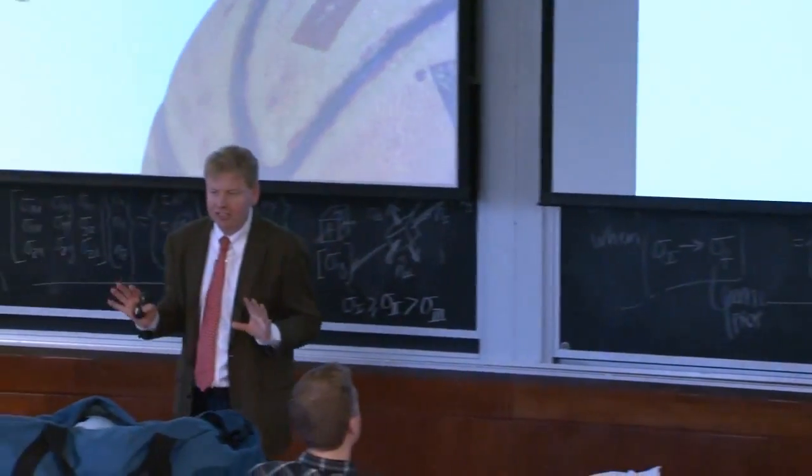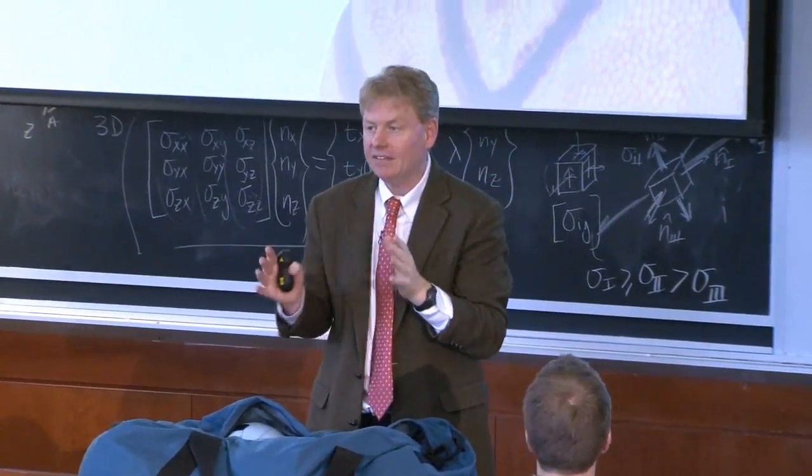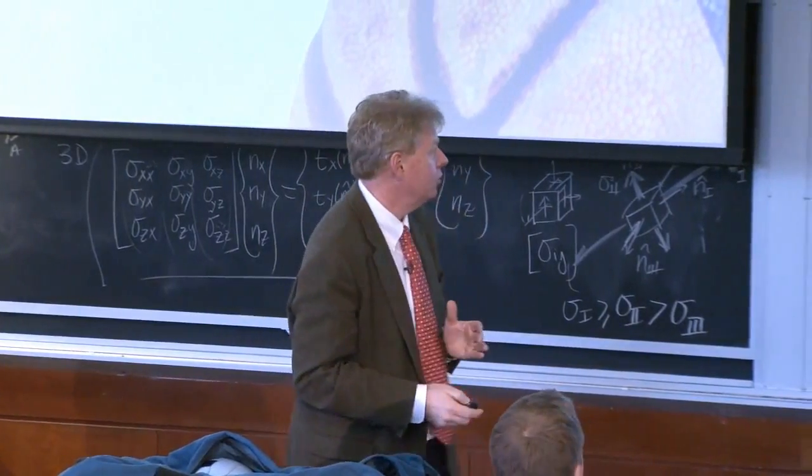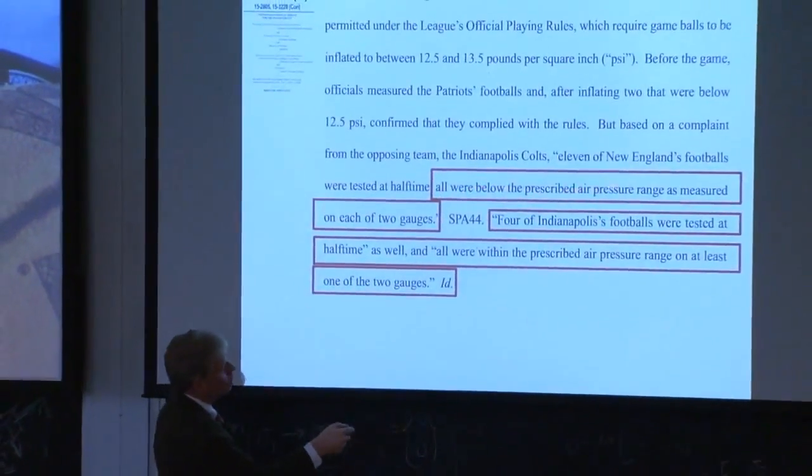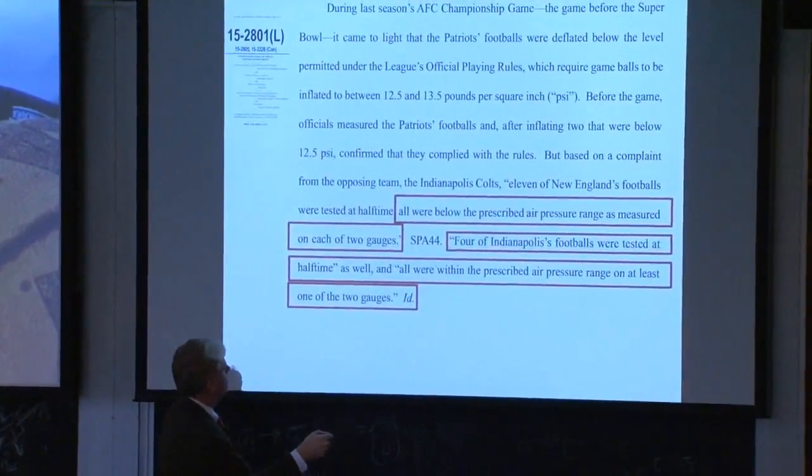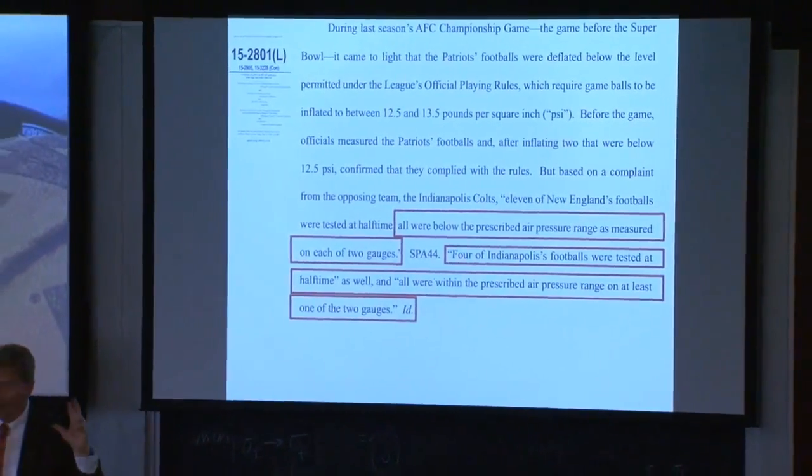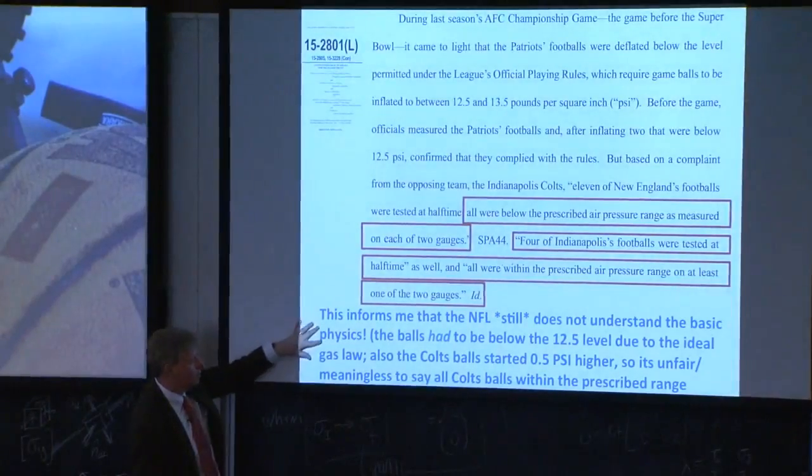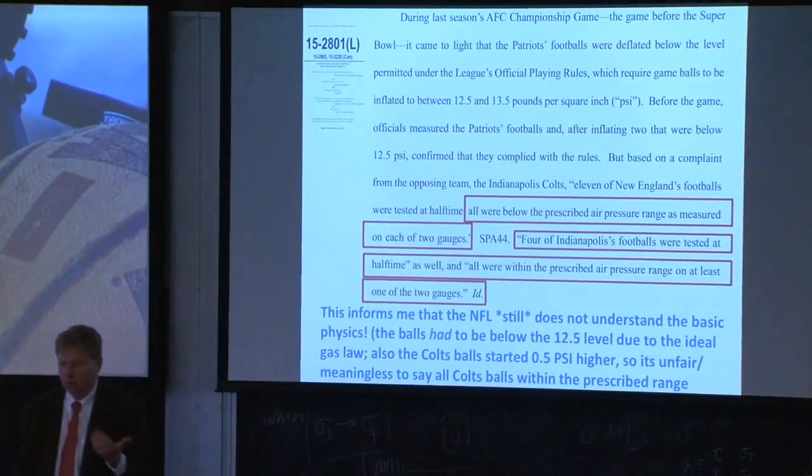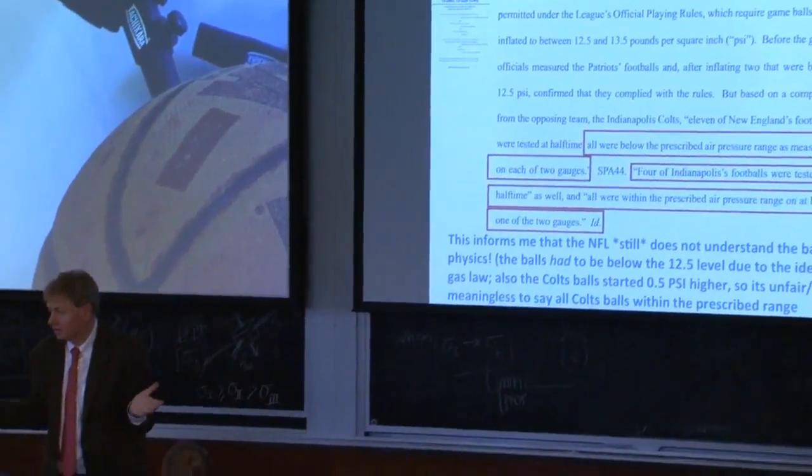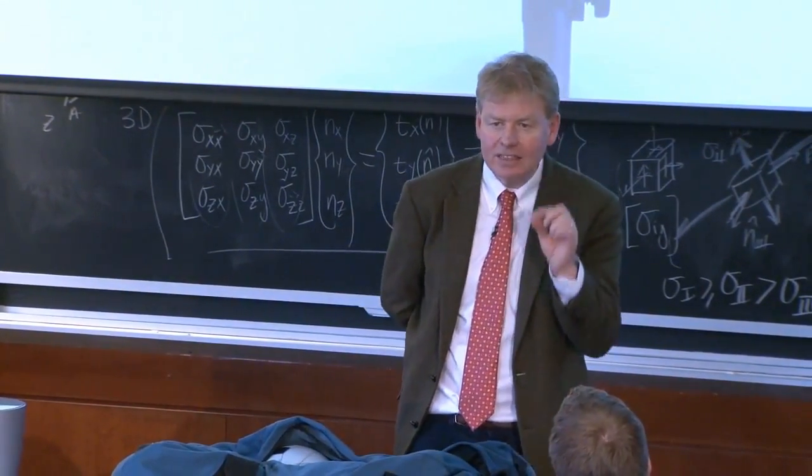There's an appeal going on, and the NFL had its chance to restate its case. 11 of the New England footballs were tested at halftime, all were below the prescribed air pressure ranges. Four of the Indianapolis footballs were tested at halftime, and all were in the prescribed air pressure range in at least one of the two gauges. This is what the NFL is describing as the crime. It's really kind of crazy because the balls had to be below 12.5 because of the ideal gas law. The Colts balls started half a PSI higher. To say that the Colts balls were in range and the Patriots balls weren't for this temperature difference is sort of crazy. They still don't know it.